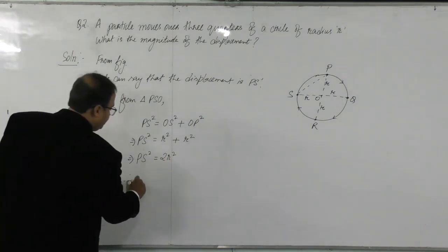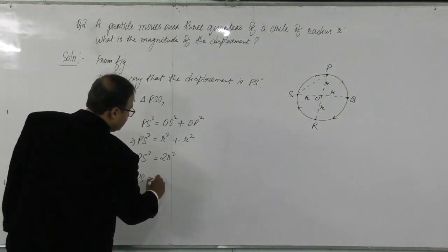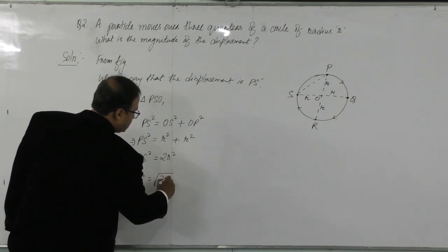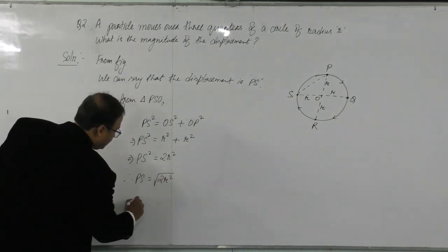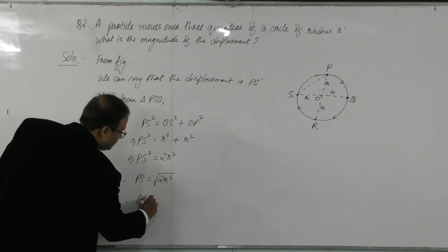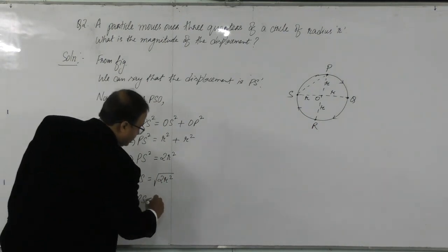Therefore, PS is equals to root over 2r square. Therefore, PS is equals to, we can write here, r root 2.